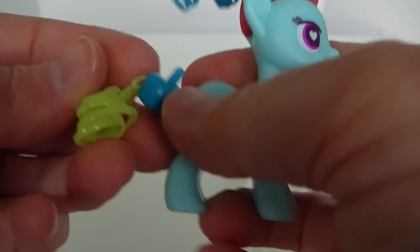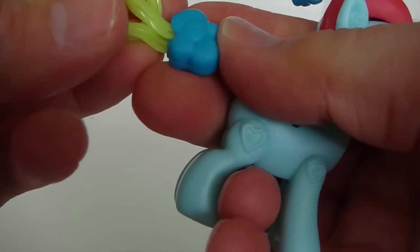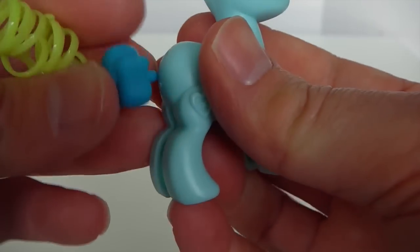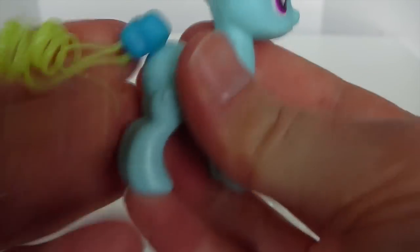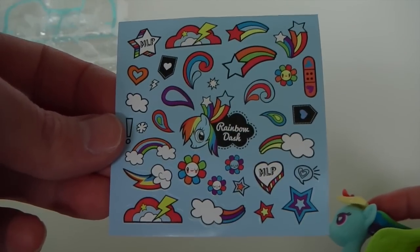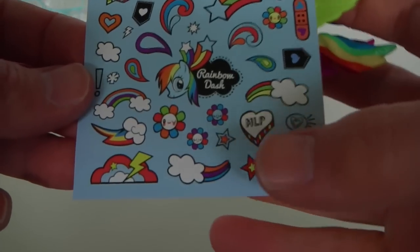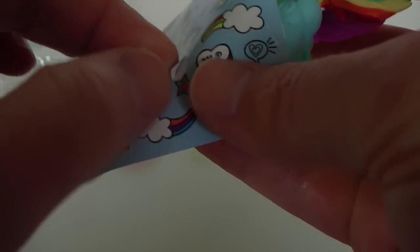And of course you get the tail as well which has these yellow curls at the bottom. And you also get a set of stickers and you can decorate your pony. So we will stick a little flower on the bottom of the hoof there.